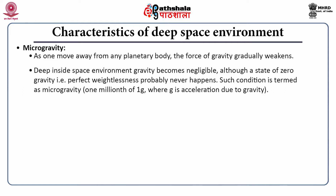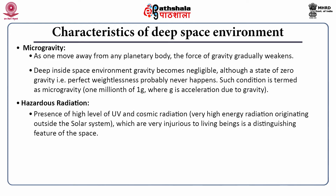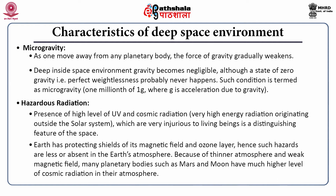The next important property is hazardous radiation. The presence of high levels of UV and cosmic radiation, which are very injurious to living beings, exists in space. On Earth, the ozone layer and magnetic field act as a protective shield, so such hazardous radiation does not penetrate in appreciable amounts. But the atmosphere of Mars and the moon, because of their thinner atmosphere and absence of such a protective layer, has a higher presence of cosmic radiation.